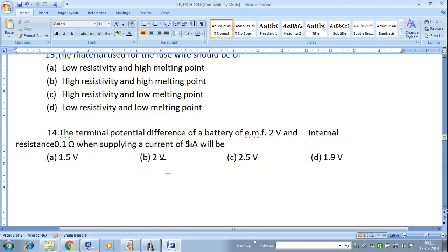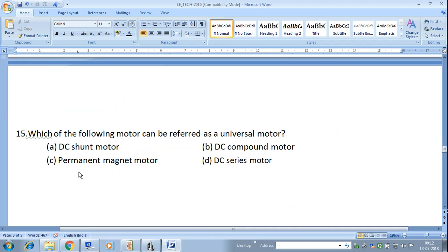Next question: The terminal potential difference of a battery of EMF 2 volt and internal resistance 0.1 ohm when supplying a current of 5 ampere will be 1.5 volt. This is correct because when supplying current 5 ampere, 5 into 0.1, that is 0.5 volt drop occurs. Therefore, terminal voltage equals 2 volt minus 0.5, that is 1.5 volt.